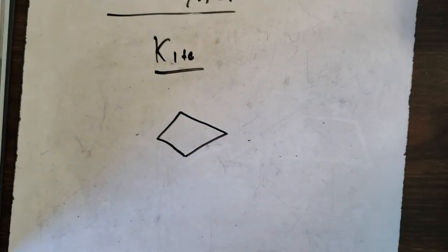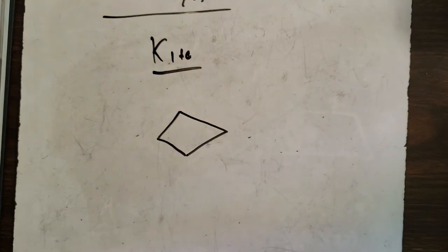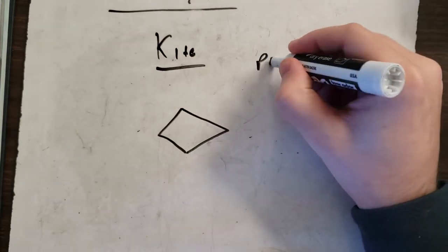So, kite. Now, to find perimeter, we still add up the outsides.